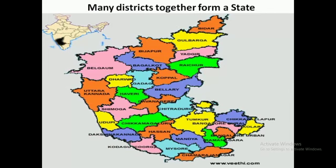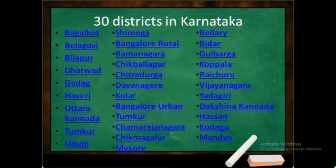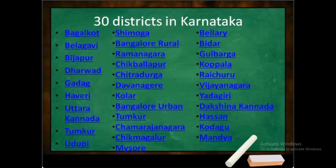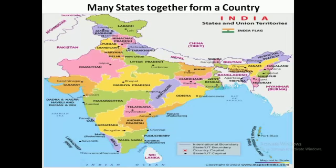We have 30 districts in Karnataka. The districts include Bagalkot, Belgavi, Bijapur, Dharwad, Gadag, Haveri, Uttar Karnataka, Tumkur, Udupi, Shimoga, Bangalore Rural, Ramanagara, Chikkaballapur, Gulbarga, Koppal, Raichur, Vijayanagara, Yadgiri, Dakshina Kannada, Hassan, Kodagu, and Mandya. All these districts together make one state — Karnataka.